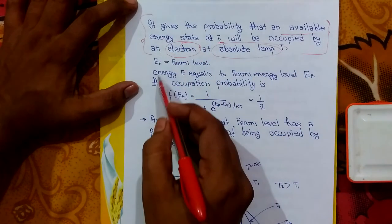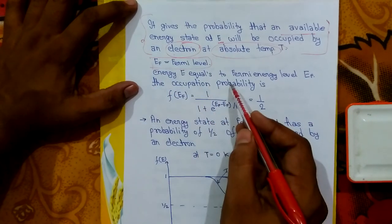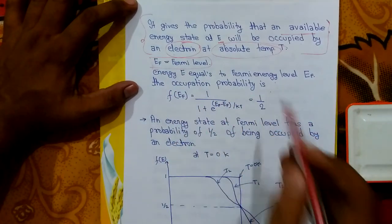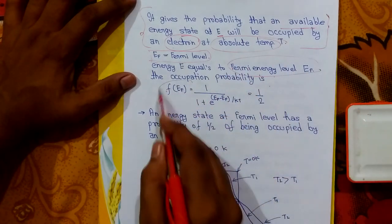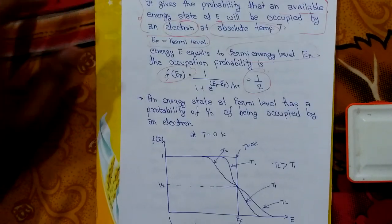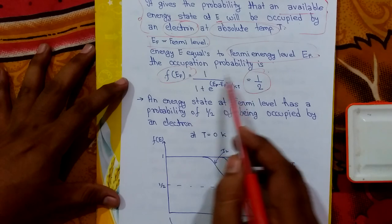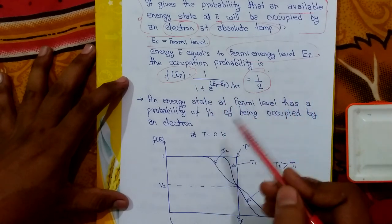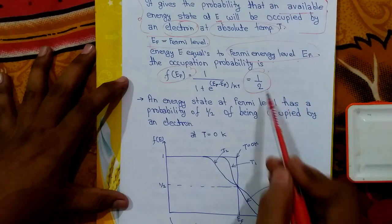EF is called the Fermi level or Fermi energy level. At the Fermi energy level, the occupation probability is 1/2, meaning the probability that an electron can occupy that energy level is one-half.